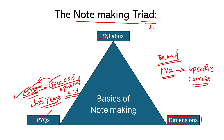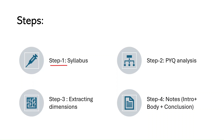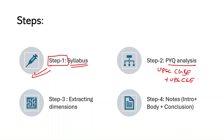By combining the syllabus and PYQs you will be able to extract the third and most important parameter for note-making: the different dimensions of each topic in the syllabus. Step one: go through the syllabus by heart, know everything written there. Step two: PYQ analysis of UPSC CGSE plus UPSC CSE optional geology — analyze those questions. Then combine these two things to extract the dimensions, and finally make your notes.